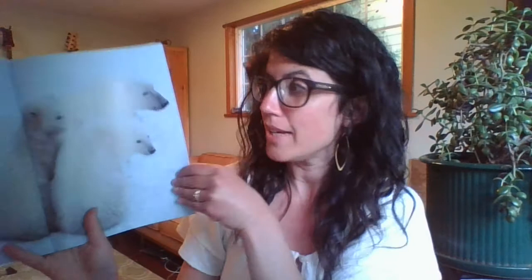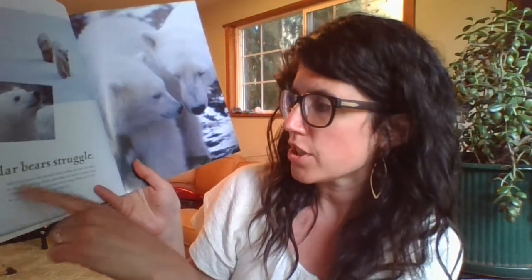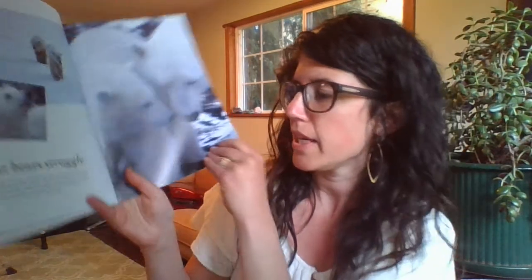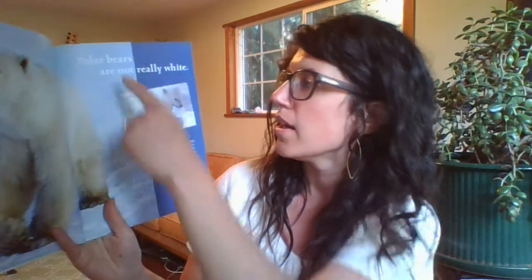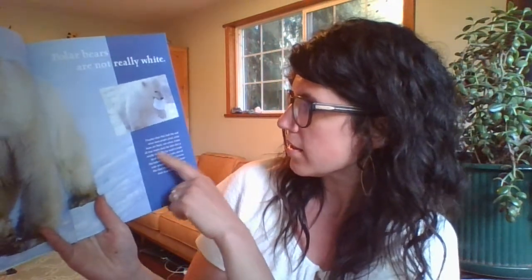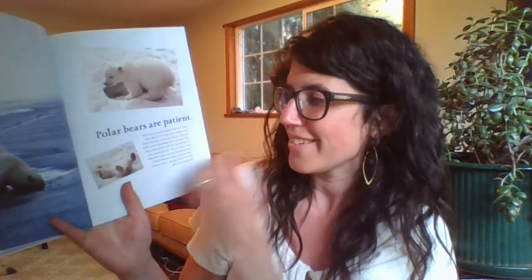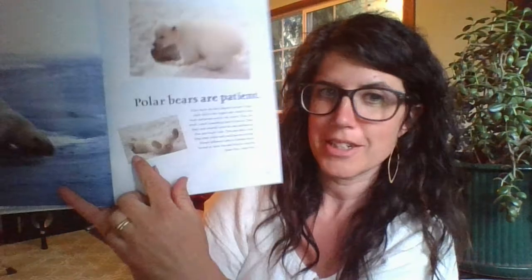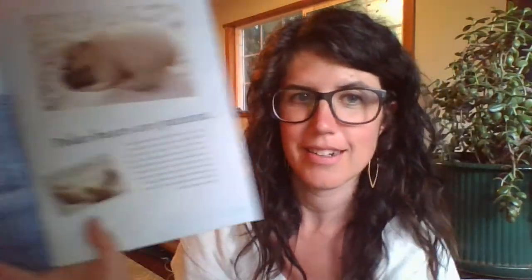Now I really need to find out more about what polar bears eat. Polar bears struggle — I'm going to skim, I don't see any words jumping out at me. Polar bears live in the Arctic — I remember this is really just about where in the world they live, that's not going to help me with what they eat. Polar bears are not really white — interesting, but I don't see anything that tells me what they eat. Polar bears are patient. The first sentence has a word that jumps out at me and tells me this might be a good page to read more of.